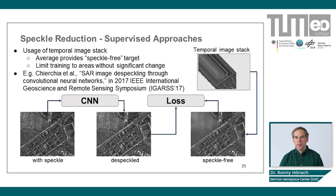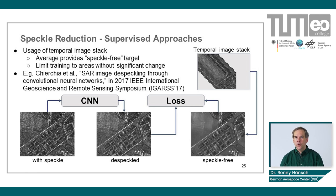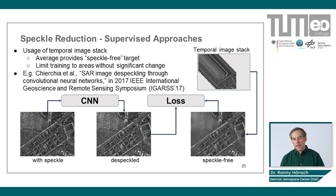A slightly better approach is to use multiple SAR images — a temporal stack of images all taken from the same surface point on Earth. The assumption is that nothing changed in between, so only the speckle is different. If this holds, you can align those images and temporally average them, which reduces speckle significantly. We then have speckle-reduced reference data and can train the network the same way as before. This is nice because we are working with real SAR images, but it only works if you have a temporal stack where nothing changes between acquisitions.